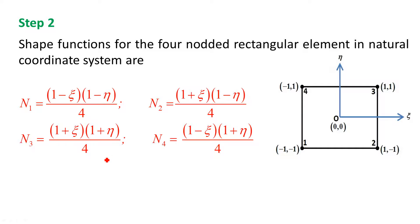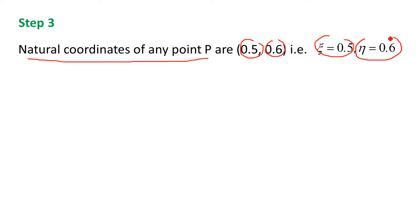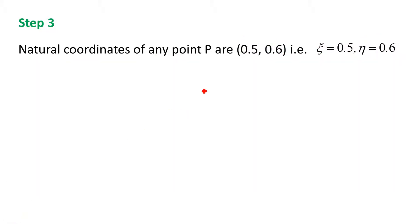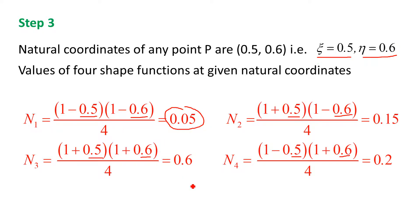Since xi and eta coordinates of point P are known — xi = 0.5 and eta = 0.6 — we can find out the values of the shape functions. Substituting xi = 0.5 and eta = 0.6 into all four shape function equations: N1 = 0.05, N2 = 0.15, N3 = 0.60, and N4 = 0.20. This is step 3.